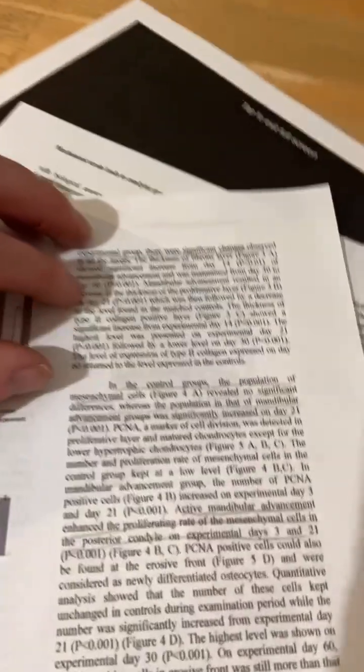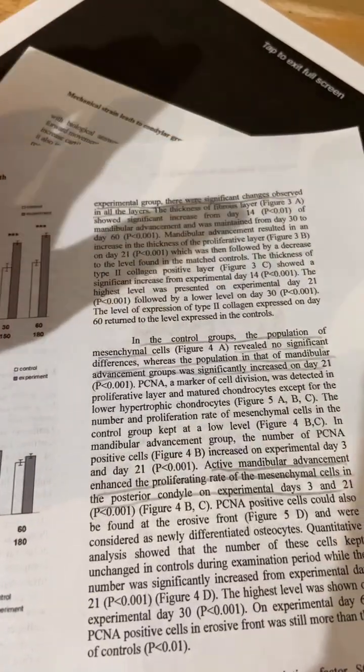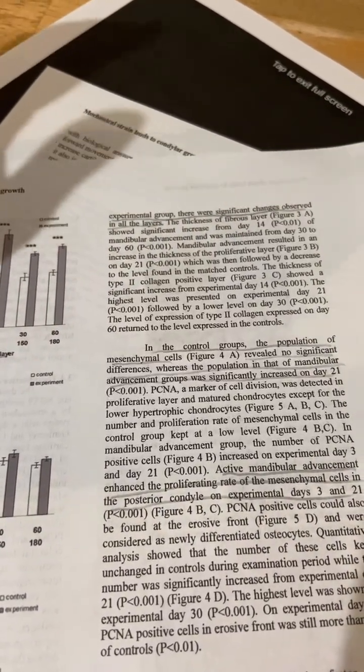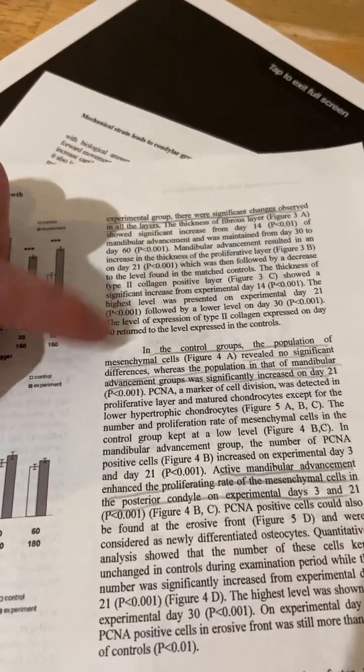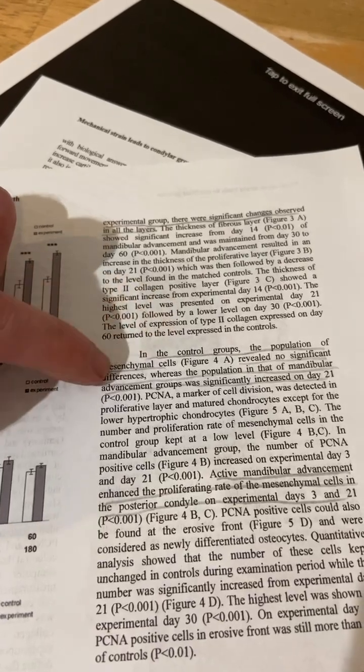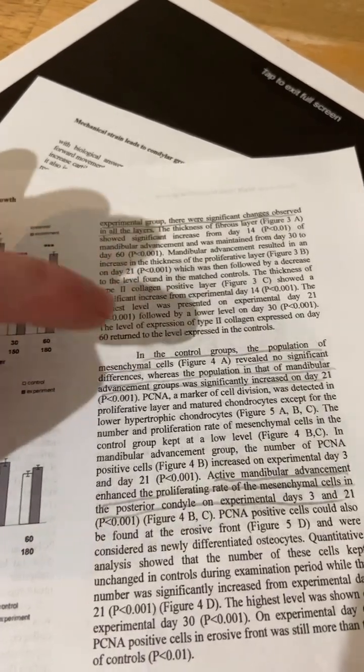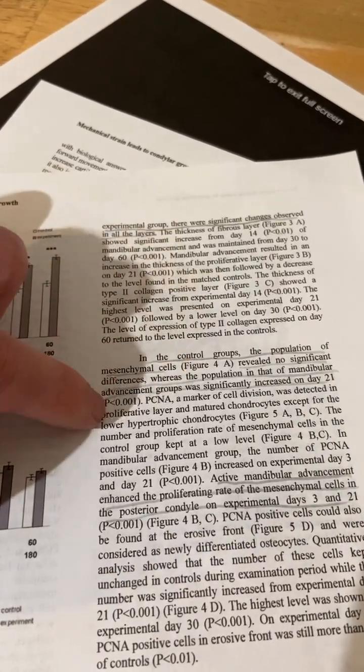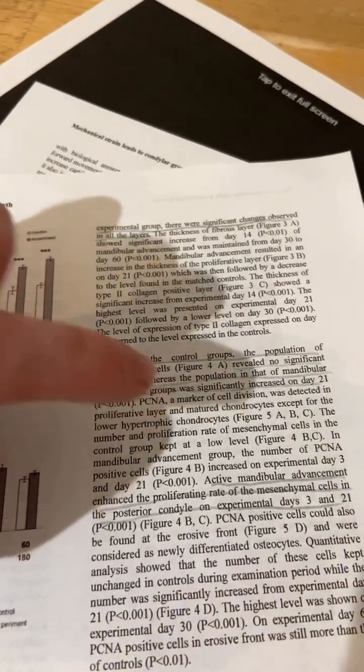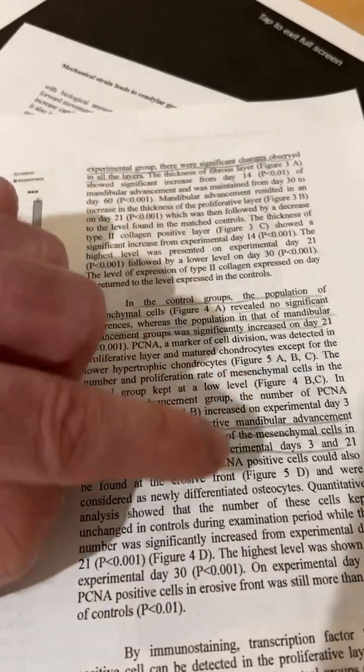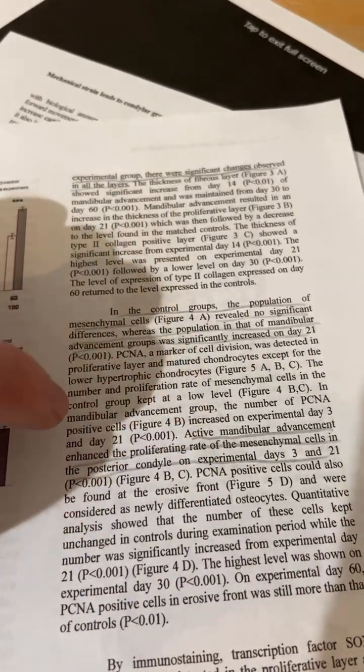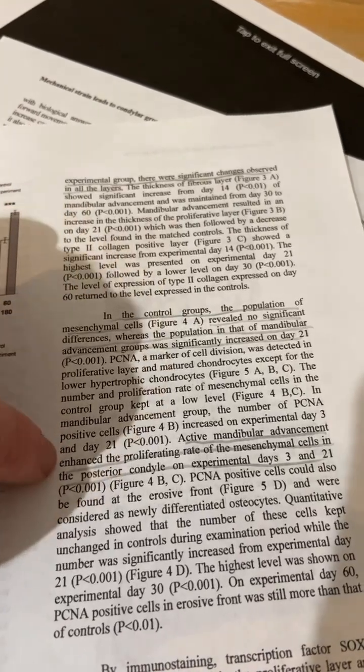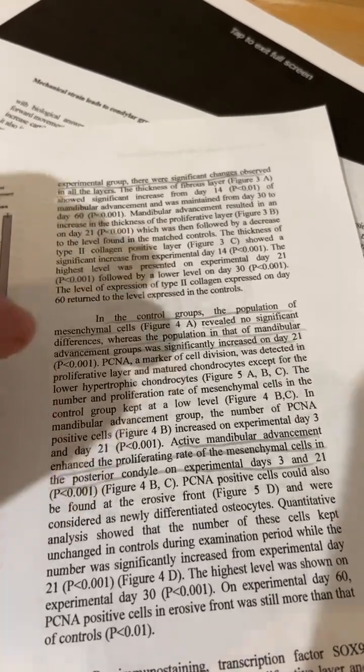So yeah, some kind of conditioning effect. Maybe if we advanced the jaw further to a greater degree, maybe we'd get more growth there. In the control group, the population of mesenchymal cells revealed no significant differences, whereas the population in that of the mandibular advancement groups was significantly increased on day 21. Active mandibular advancement enhanced the proliferating rate of the mesenchymal cells in the posterior condyle on experimental days 3 and 21.